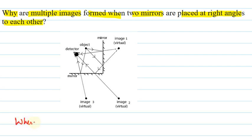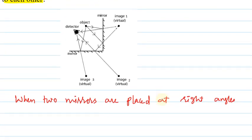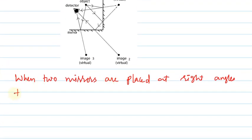When two mirrors are placed at right angles to each other, we get multiple images because